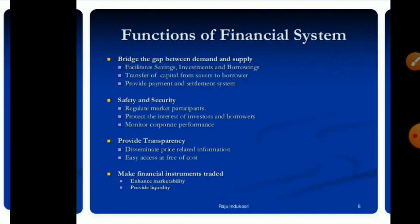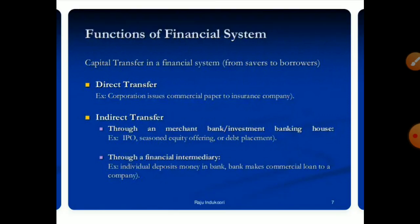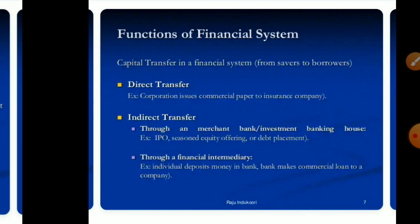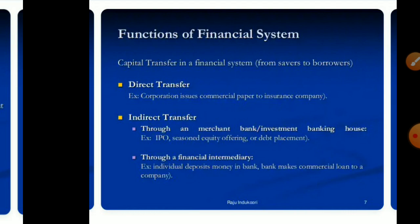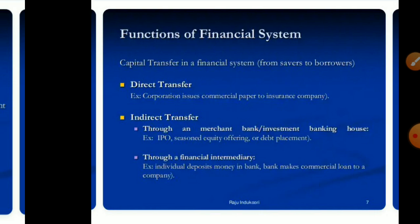Both lenders and borrowers are related to demand and supply. All participants in the financial system require security — even the lender and the borrower need security. Capital transfer in the financial system from savers to borrowers happens through direct transfer and indirect transfer, through a merchant bank or investment banking house, or through financial intermediaries.